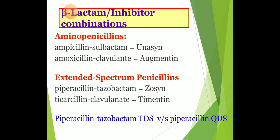Addition of clavulanic acid with amoxicillin extends the antimicrobial spectrum against beta-lactamase-producing bacteria like Streptococcus pneumoniae, Haemophilus influenzae, Moraxella, methicillin-sensitive Staph aureus, beta-lactamase-producing anaerobes, E. coli, and Proteus. All beta-lactamase inhibitor combinations require dose adjustment in patients with renal insufficiency because they are excreted via the kidney.